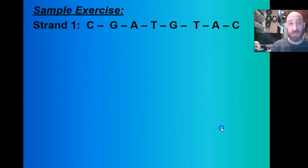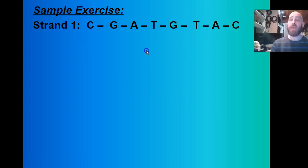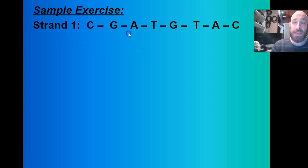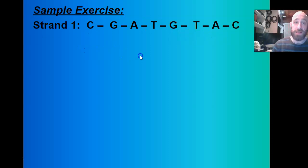Let's do one more. Given the strand C, G, A, T, G, T, A, C — think about it for a second. The answer would be G, C, T, A, C, A, T, G because it complements it.